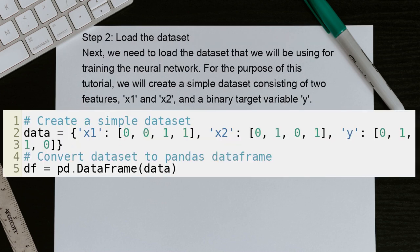Step 2: Load the dataset. Next, we need to load the dataset that we will be using for training the neural network. For the purpose of this tutorial, we will create a simple dataset consisting of two features, X1 and X2, and a binary target variable, Y.